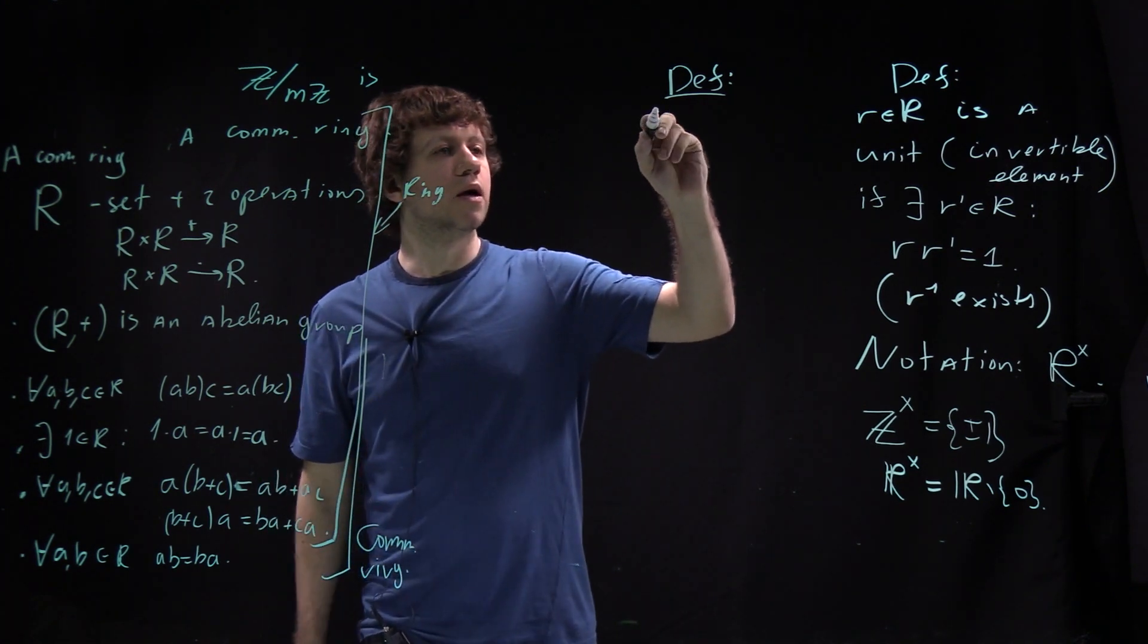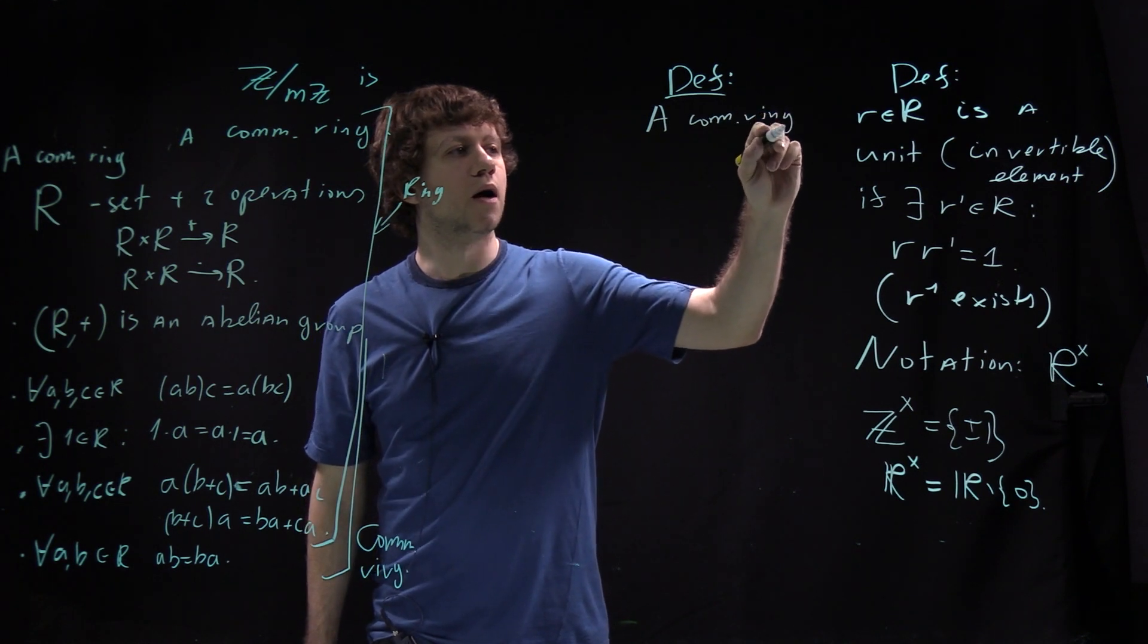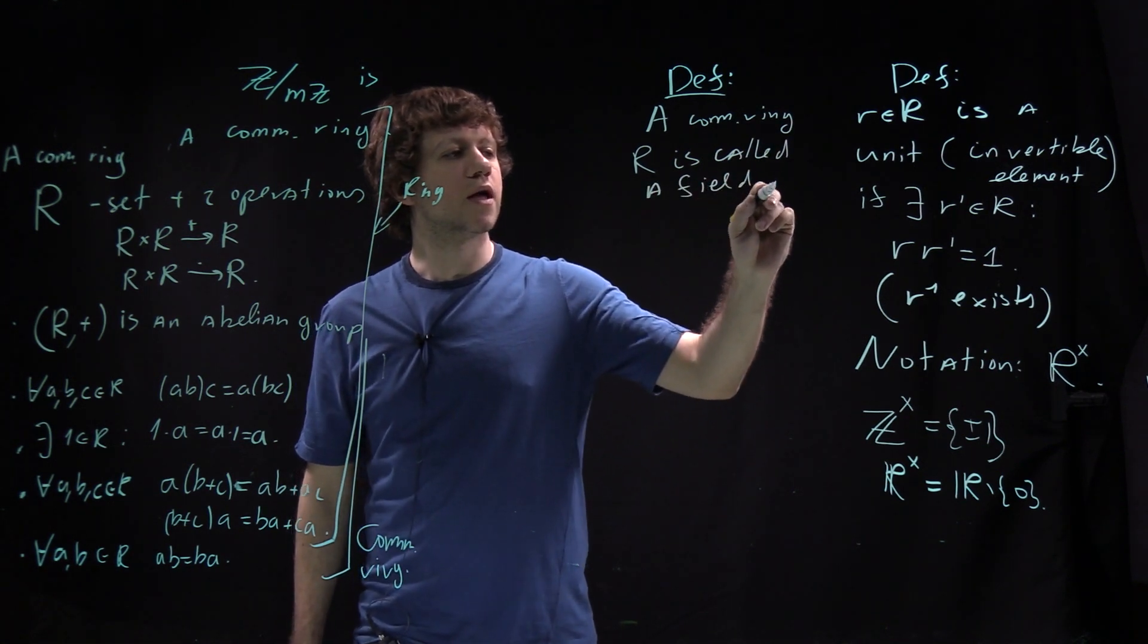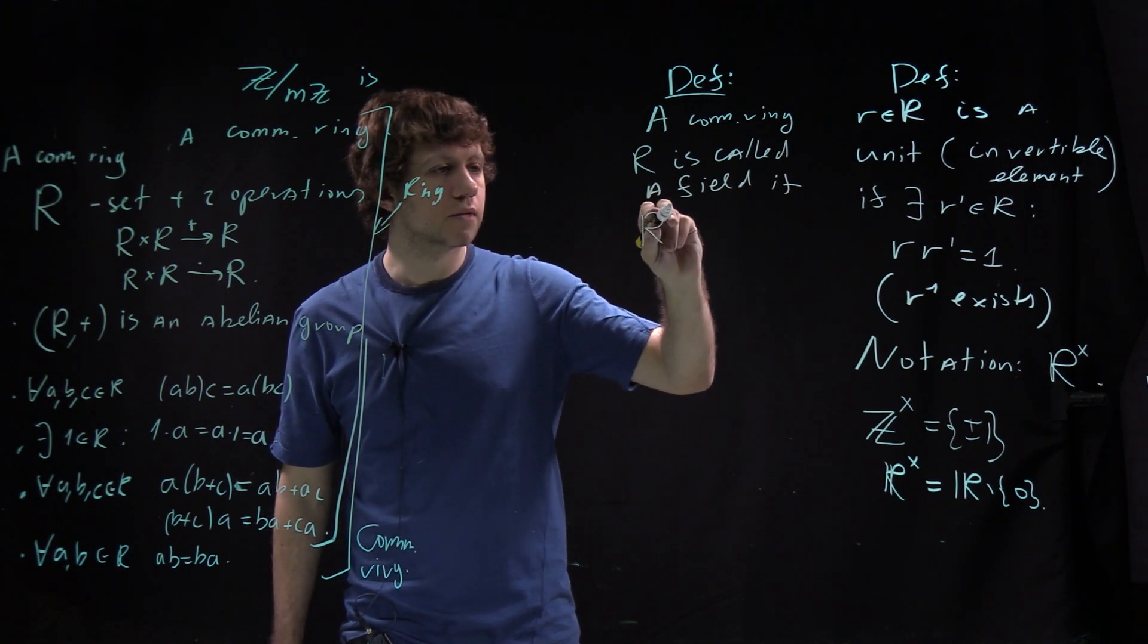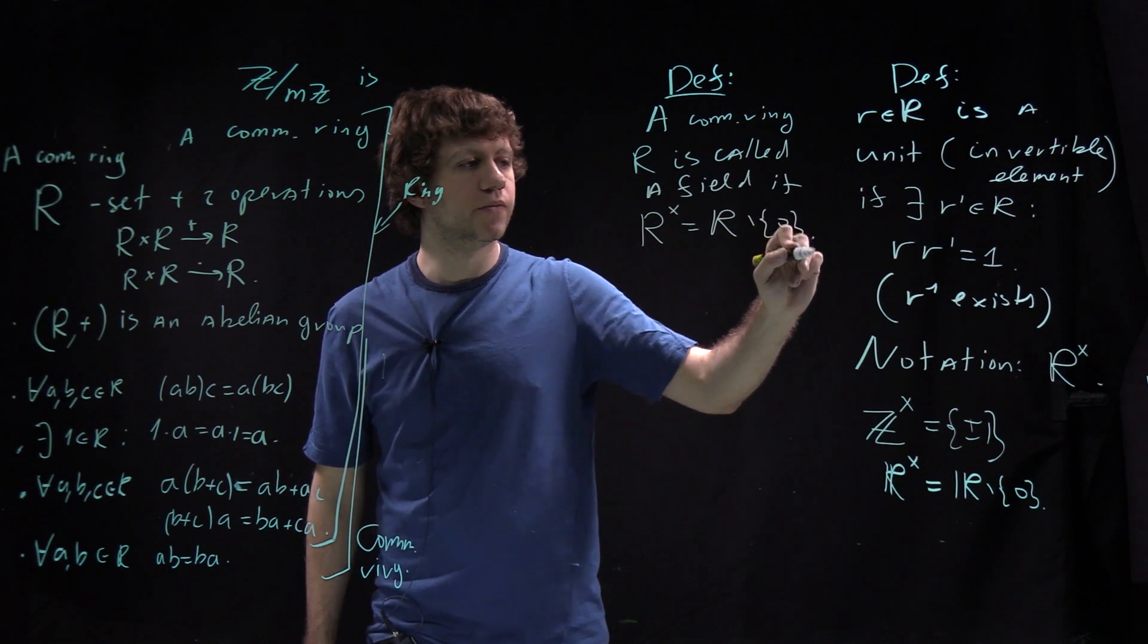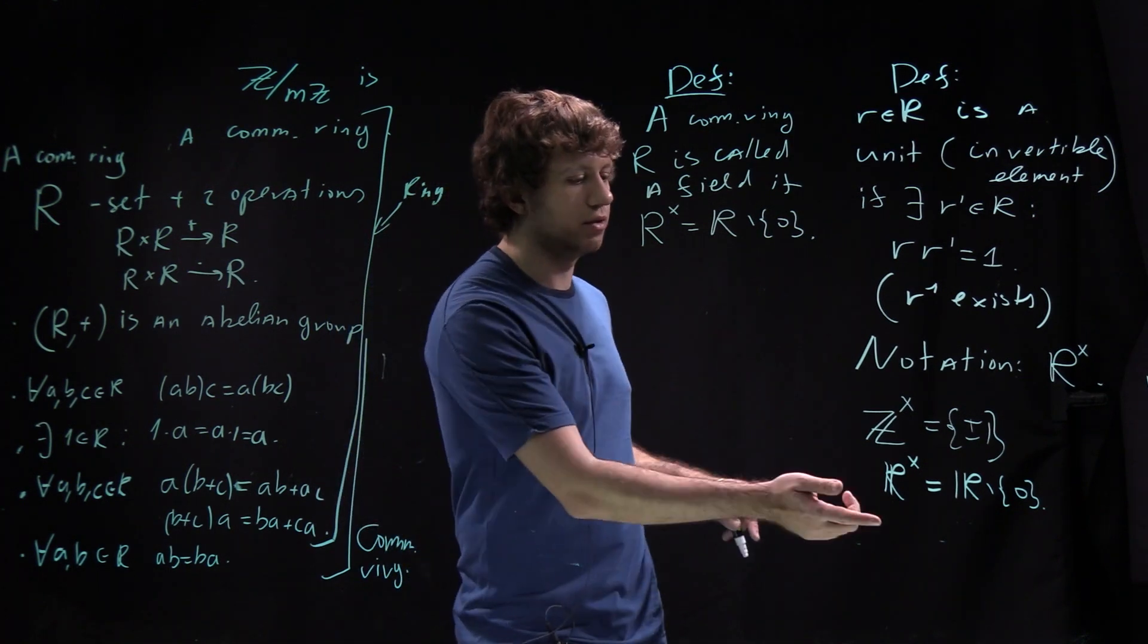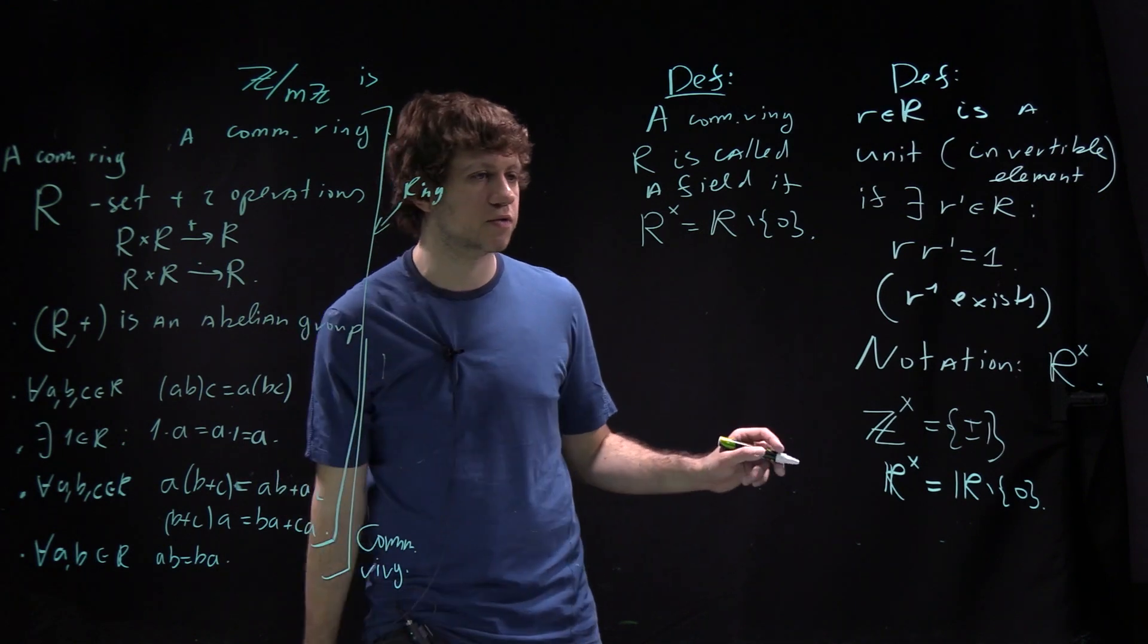A commutative ring R is called a field if R times equals R without 0, meaning you can divide by anything except 0. Complex numbers, rational numbers, real numbers are fields. Z is not a field, polynomials are not a field.